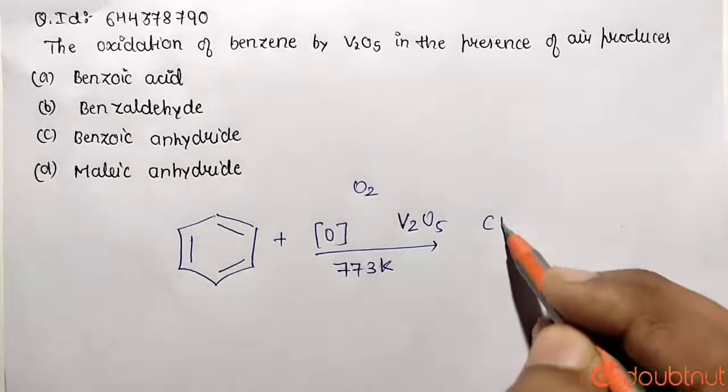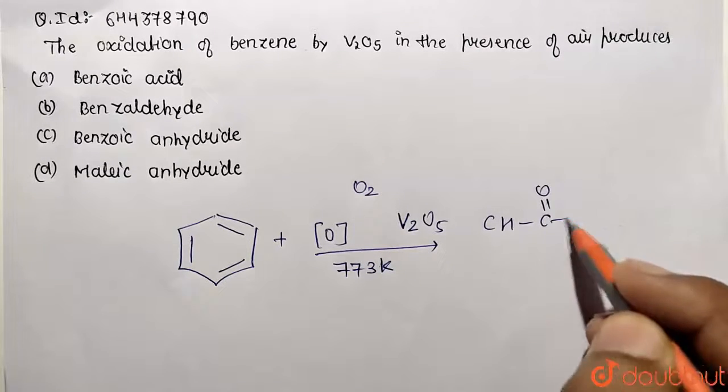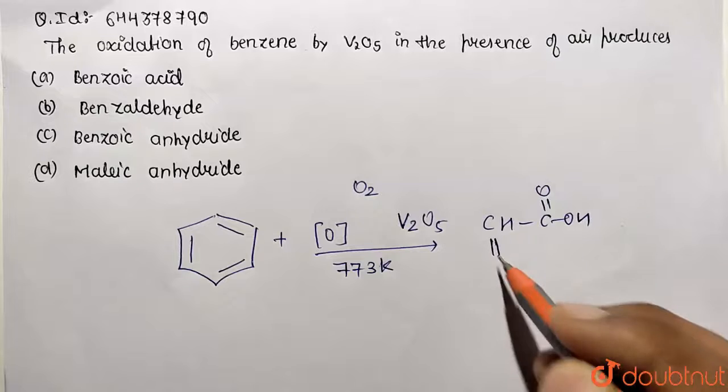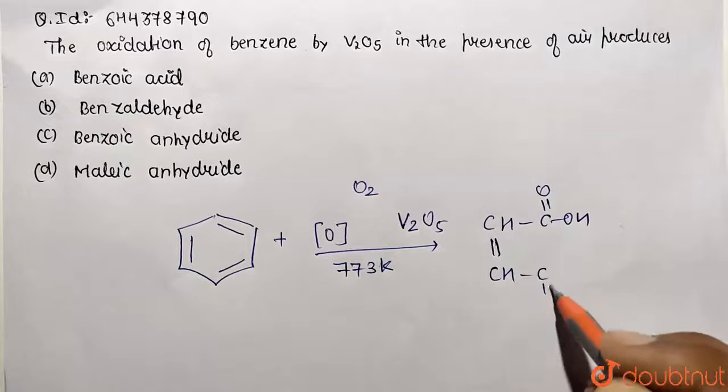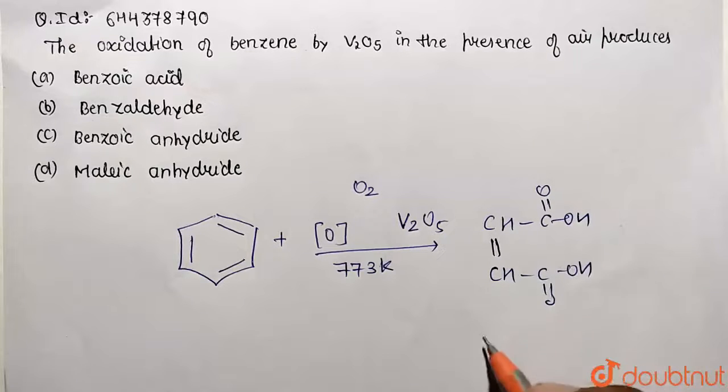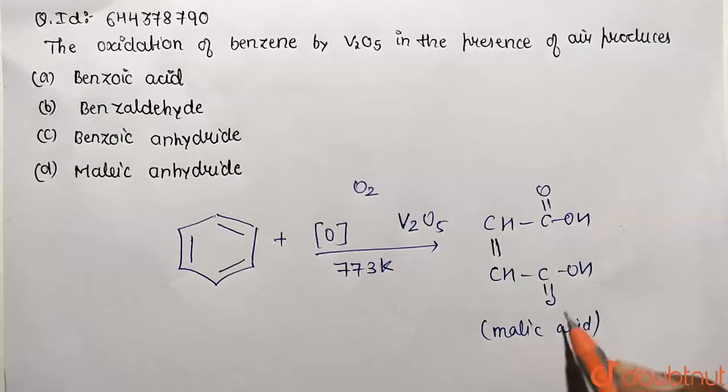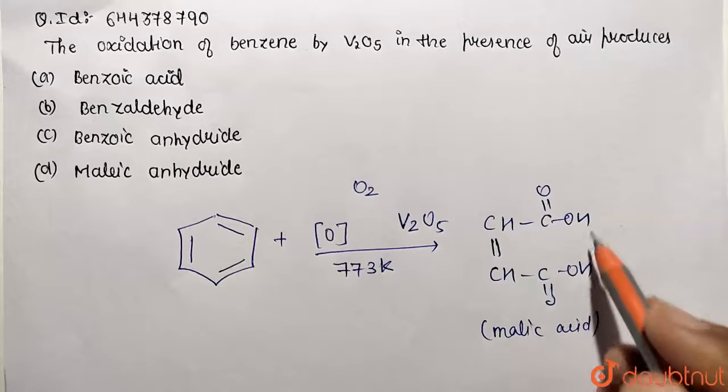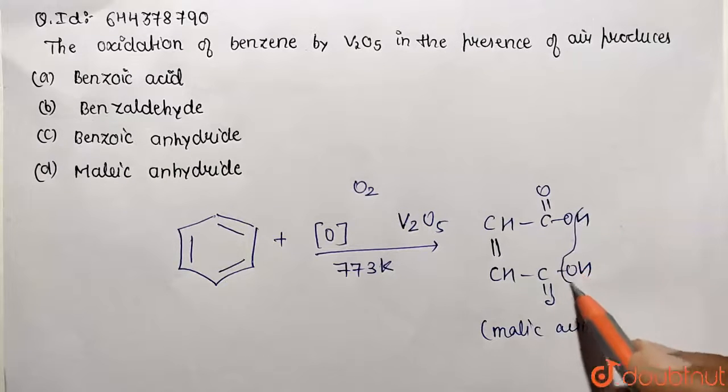Which is having the formula of CH and C double bond OH, this is being linked with double bond CH and C double bond OH. So this is what maleic acid was produced.